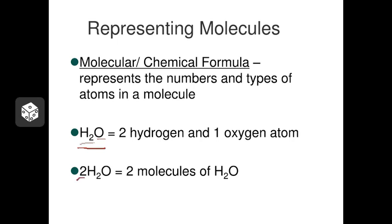If you see a number in front of the formula, that's called a coefficient, and it tells you how many of these molecules you have. So if you just saw H2O by itself, that would tell you that you have one molecule. But if you saw 2 H2O, that would tell you that you have two molecules.